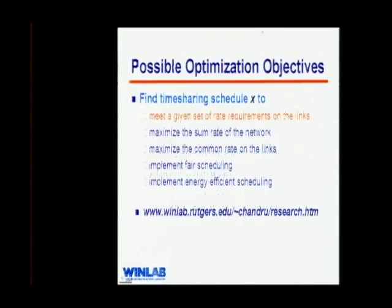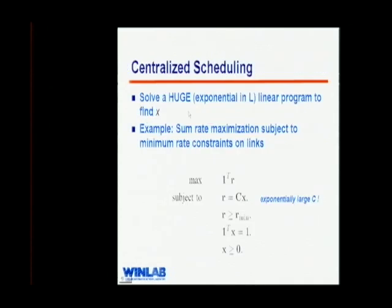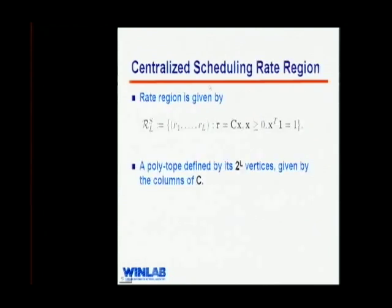The possible optimization objectives include meeting a given set of rate requirements on the links, maximizing sum rate, maximizing common rate, fair scheduling, and energy-efficient scheduling. The other cases are considered by Chandru. Here we concentrate on meeting given rate requirements. Given the rate matrix C, the rate region is defined by which combinations of rates across links are achievable through the scheduling distribution.